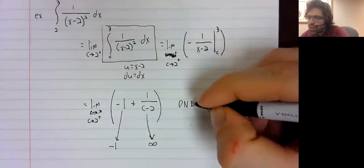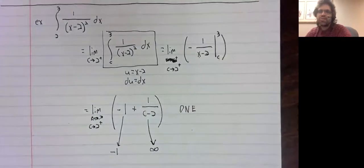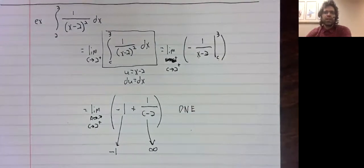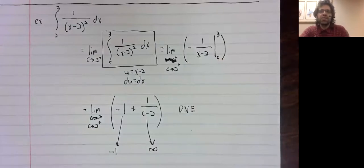This does not exist. If an improper integral does not exist, we say it diverges.